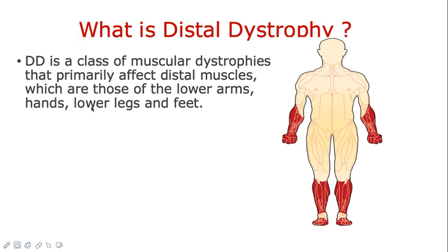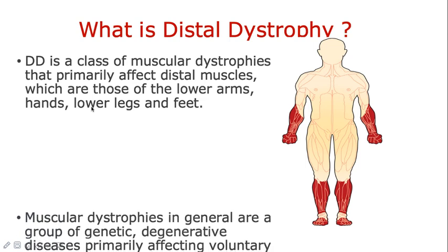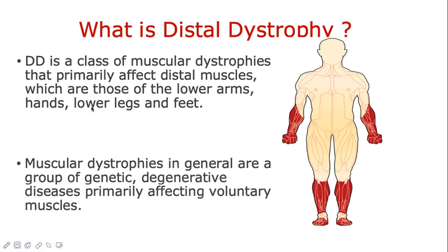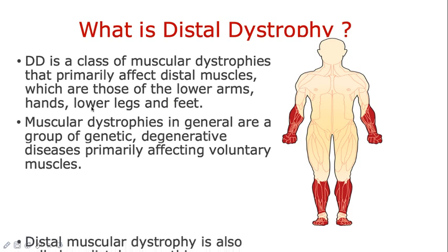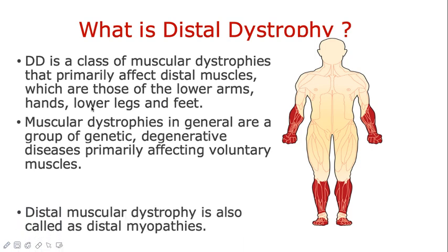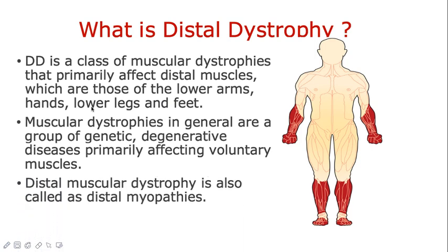The distal muscles are those muscles present in the lower arms, hands, lower legs, and feet. Muscular dystrophies are a group of genetic disorders that are degenerative in nature and primarily affect the voluntary muscles of our body. Distal muscular dystrophy is also called distal myopathies because it causes inflammation in the muscle cells.